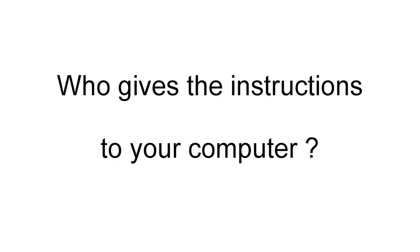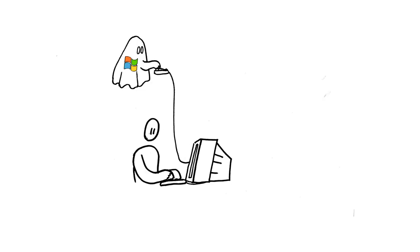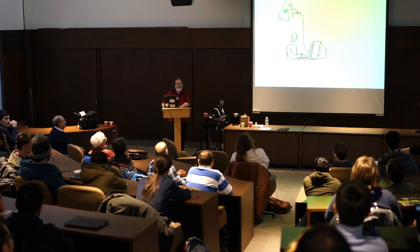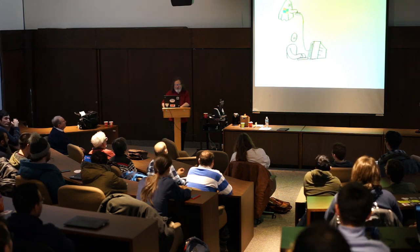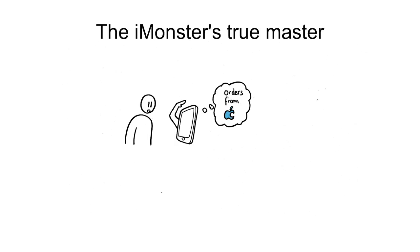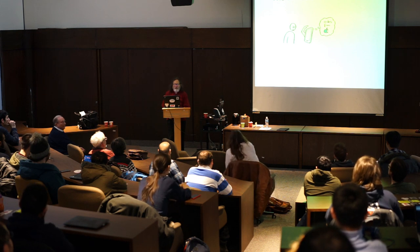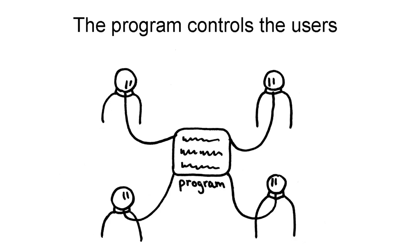The question is: who gives the instructions to your computer? You might think it's you, when really it's someone else. Your computer might seem to be obeying you when really it's obeying its true master, and it does what you want only if the true master says okay. So with any program there are two possibilities: either the users control the program, or the program controls the users.